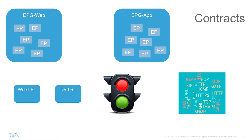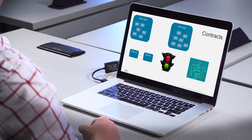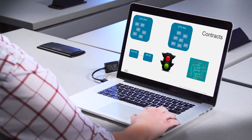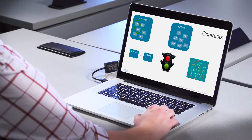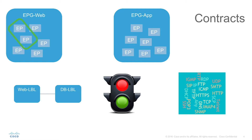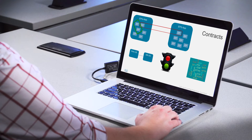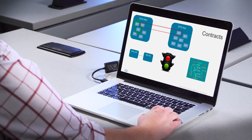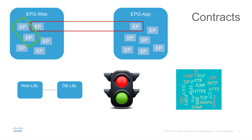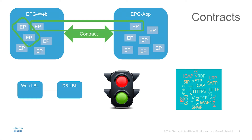Back to our example: endpoints within an EPG can communicate by default unless we turn on isolation, which we'll talk about in another video. ACI uses a whitelist model, so essentially there's a stateless firewall enabled over the entire fabric, meaning by default an endpoint in one EPG cannot communicate with an endpoint in another EPG. The way we enable traffic between endpoints is by using a contract.